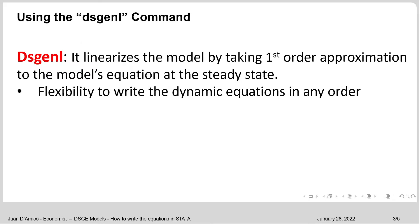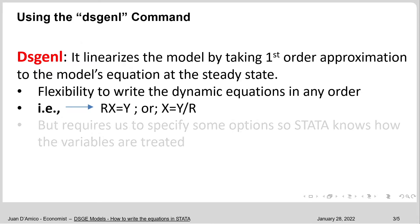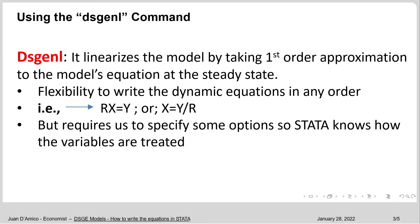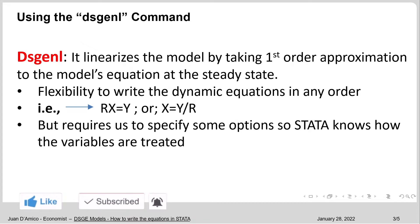This gives us the flexibility to write the dynamic equations in any order we wish. For example, suppose you have r times x equals y — you can also write that equation as x equals y over r. This type of freedom does require us to specify some options so that Stata knows how it should treat each of the variables in the model.